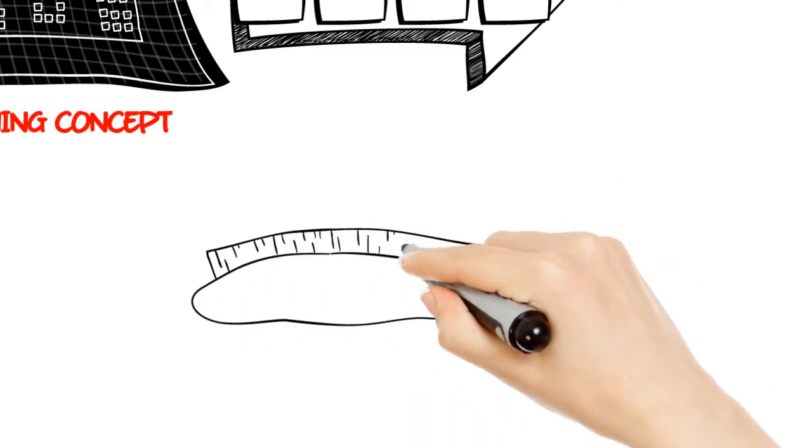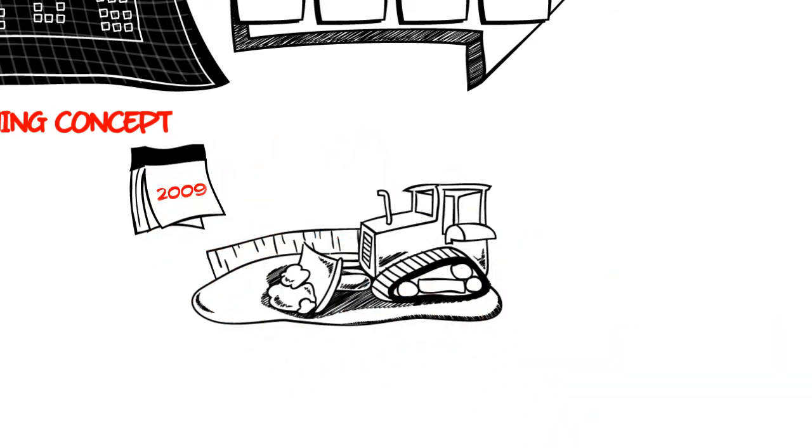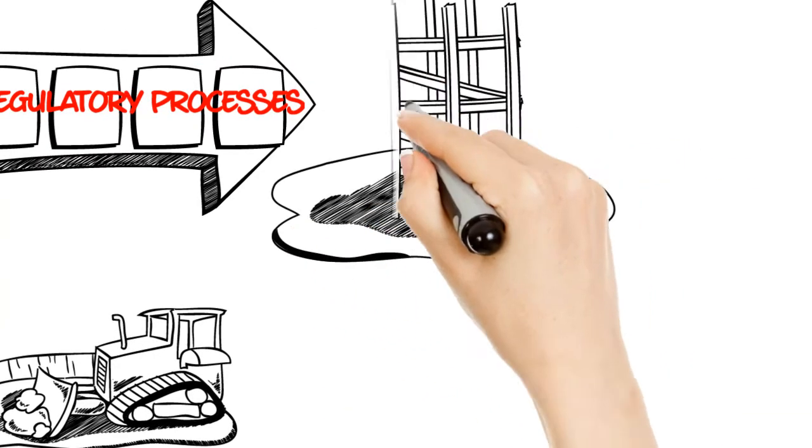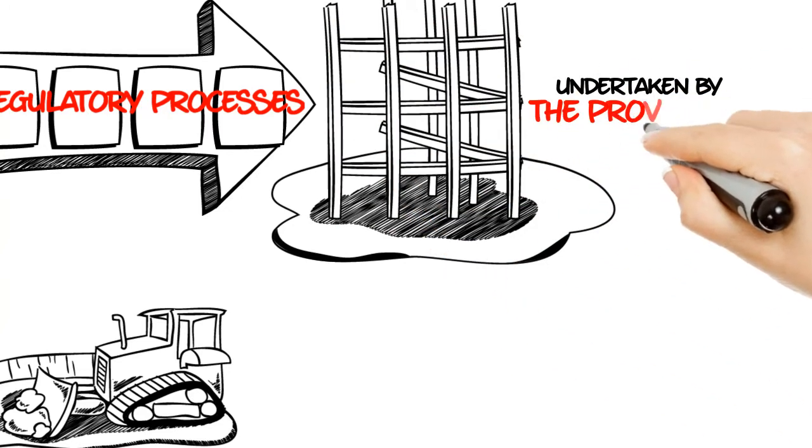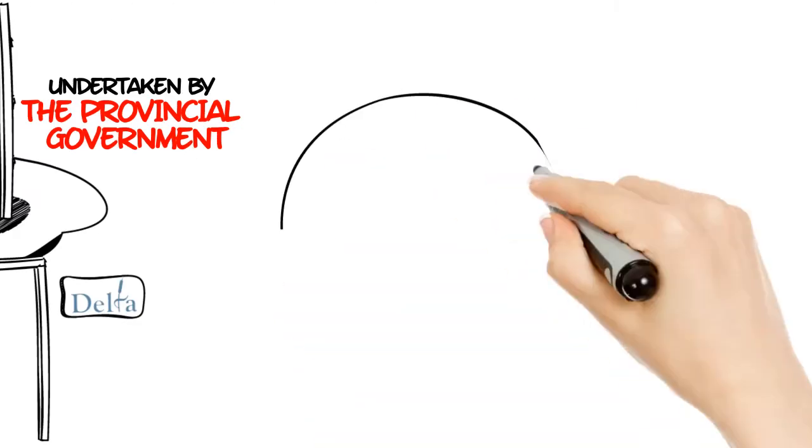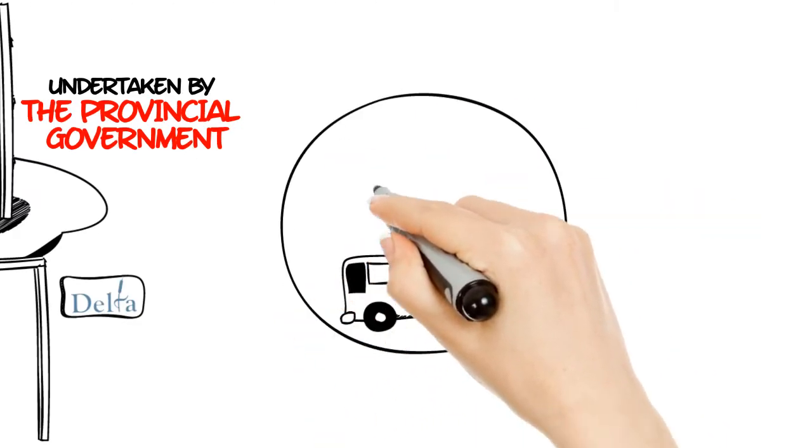Then came the break that was needed. In 2009, construction began on the South Fraser Perimeter Road, which crosses through the south end of the landfill sites. Extensive engineering and environmental protection works would be undertaken by the provincial government, enabling Delta to piggyback on the works being undertaken by the Ministry of Transport and complete the closure works for the rest of the site.